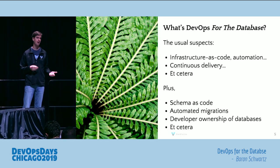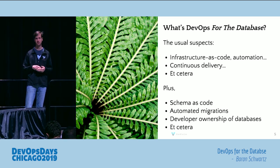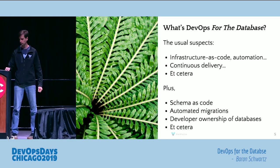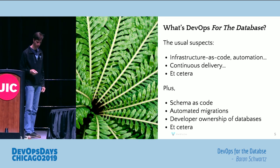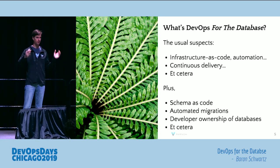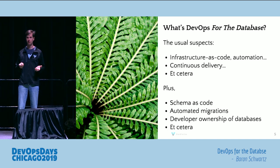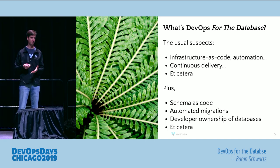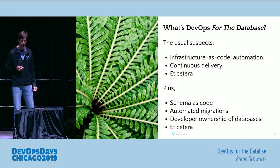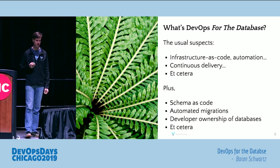In order for developers to own database operations — own the production behavior, performance, availability, and quality of service of their databases — you need a handful of things, including schema as code and automated migrations. You can see this being done in some areas, but just as anywhere in DevOps, there are things that are harder to do. If you're doing a Ruby app on Heroku, it's a lot easier to do schema migrations than it is to retrofit that into a legacy monolith. That's broadly what DevOps for the database looks like.